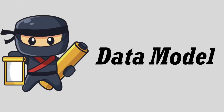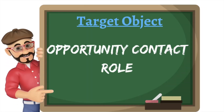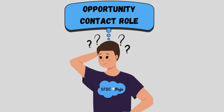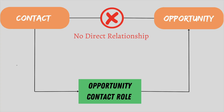To set the foundation of today's scenario, let's start with the data model. In today's scenario, opportunity contact role will be the target object. So what is opportunity contact role? It defines the role that a contact plays in a deal or opportunity. Basically in Salesforce, there is no direct relationship between contact and opportunity, but they are connected with each other by a many-to-many relationship through an object called opportunity contact role.